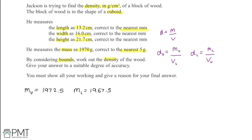Now for the volume bounds. Volume equals length times width times height. The upper bound for volume is the upper bound for length times the upper bound for width times the upper bound for height, since multiplying the highest possible values together gives the highest possible volume.